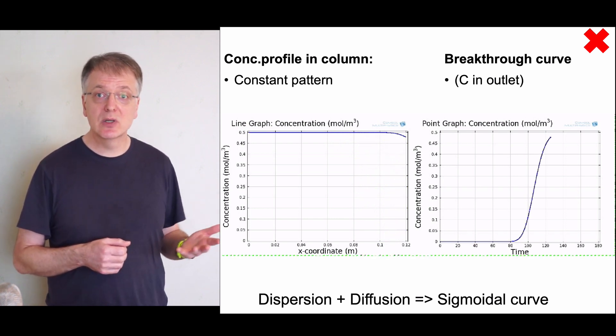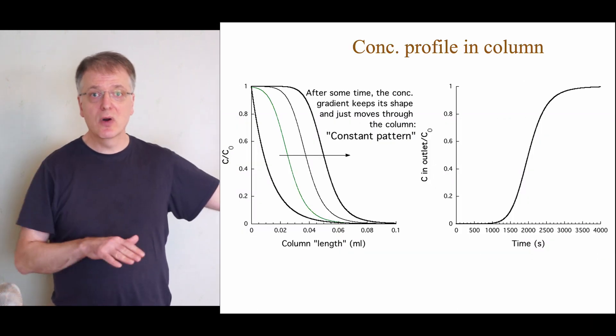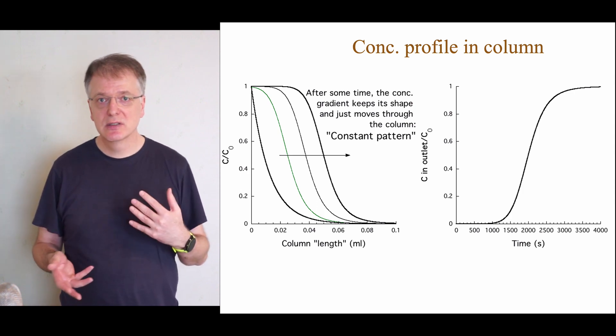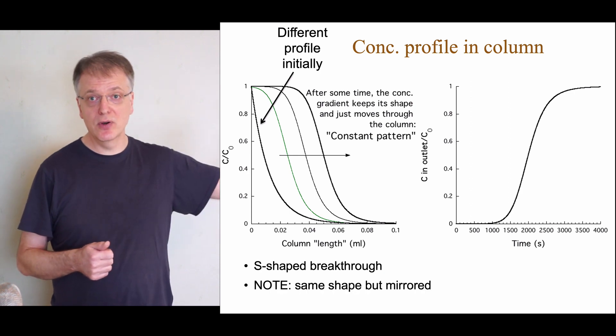In the outlet, we see over time a mirror image of the concentration profile in the column. Thus, the profile initially changes, and then a constant pattern develops, and we get an S-shaped breakthrough curve.